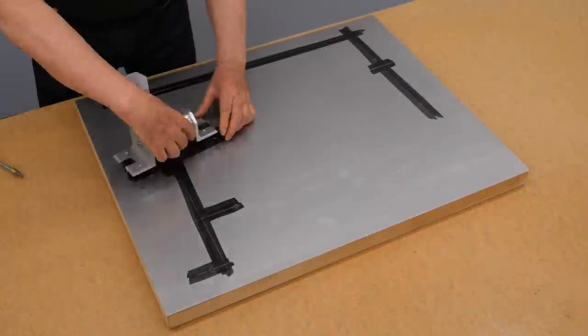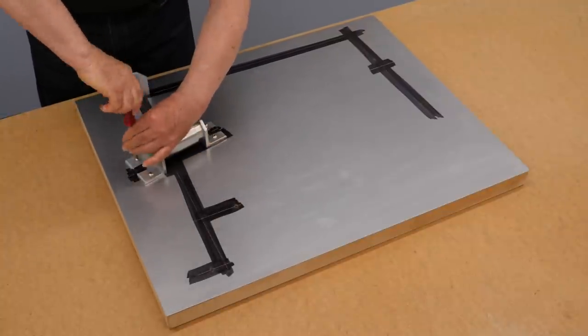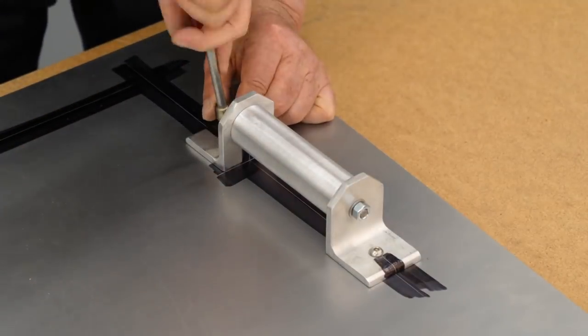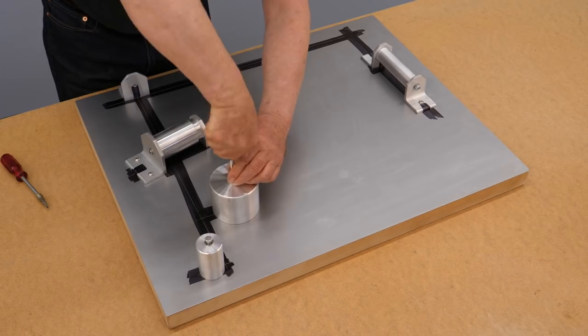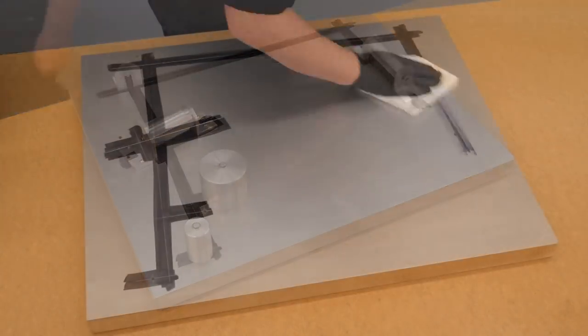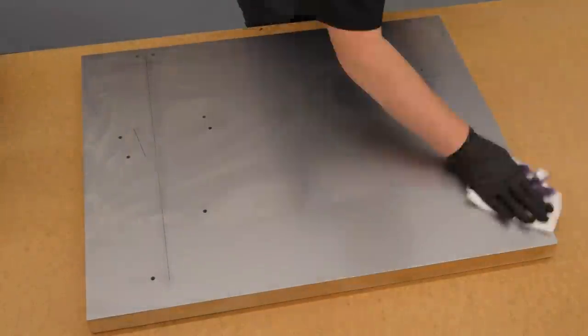With all the holes drilled, the components were reassembled on the fixture to make sure everything was properly aligned. Everything looks great, so now the ink from the marker pen can be cleaned off and all the components can be assembled.